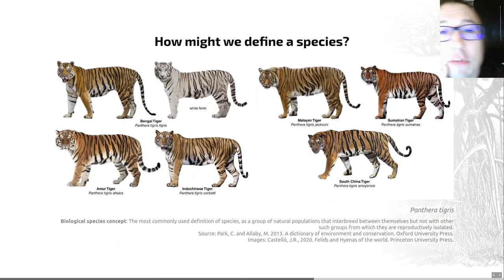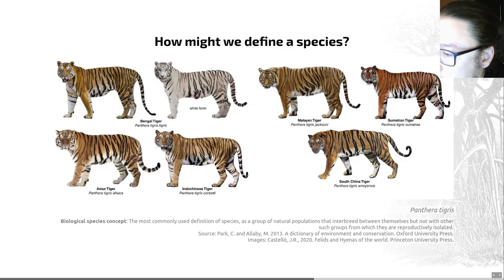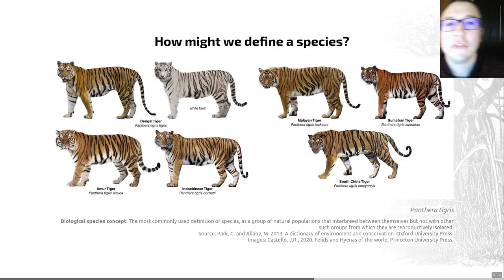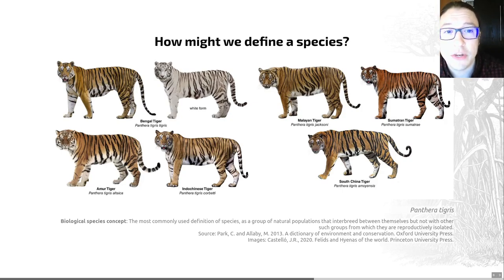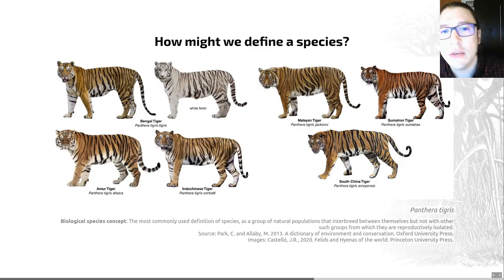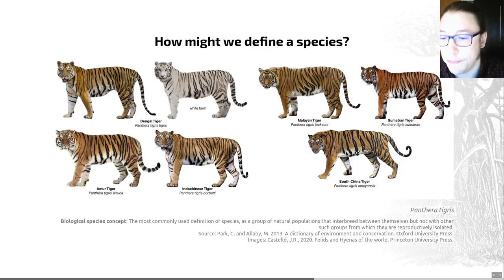So let's look at how we might define a species. The biological species concept is the most commonly used definition — a group of natural populations that interbreed among themselves but not with other such groups, from which they are reproductively isolated. That's a very famous species concept you've probably met before. When we identify a species, we normally give it a binomial name — that's the basis of the Linnaean system. We might use the tiger as an example: the tiger is Panthera tigris — that's its binomial.